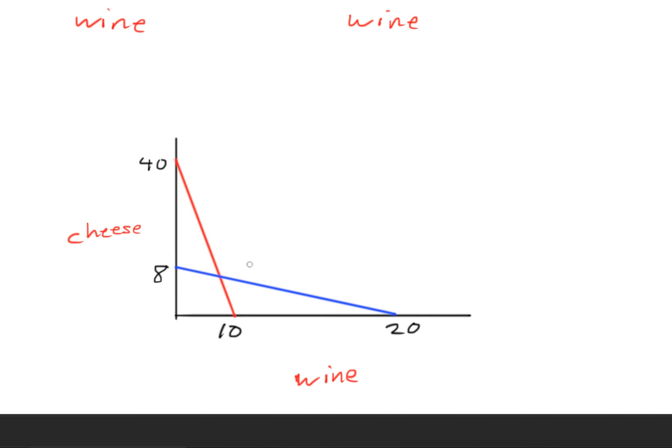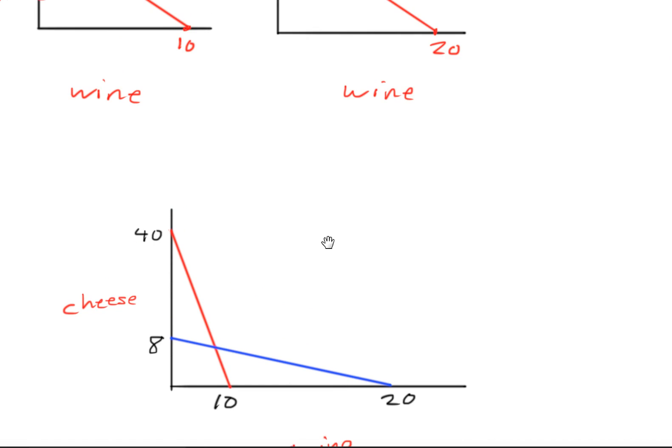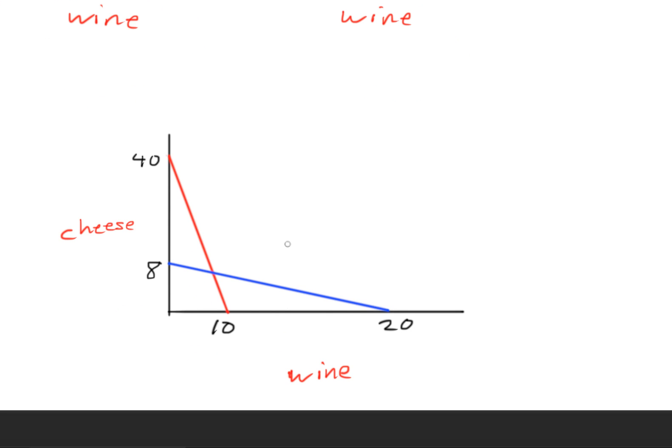Of course, it's not drawn to scale, but this kind of shows what's happening. And in order to find how much they can both produce, it has to lie somewhere in the middle. So it has to be at this point right here.